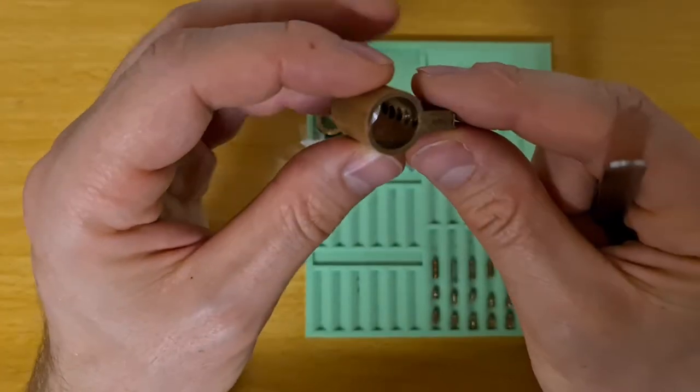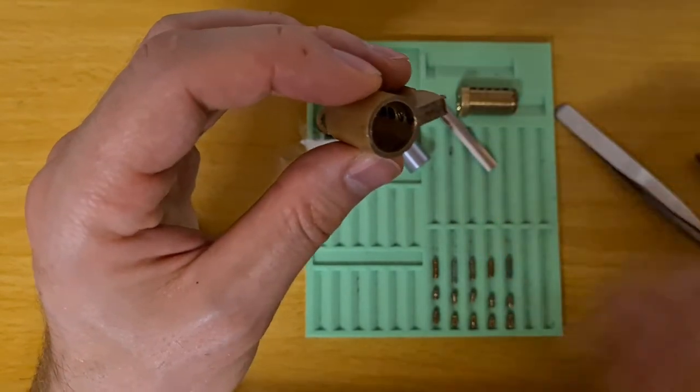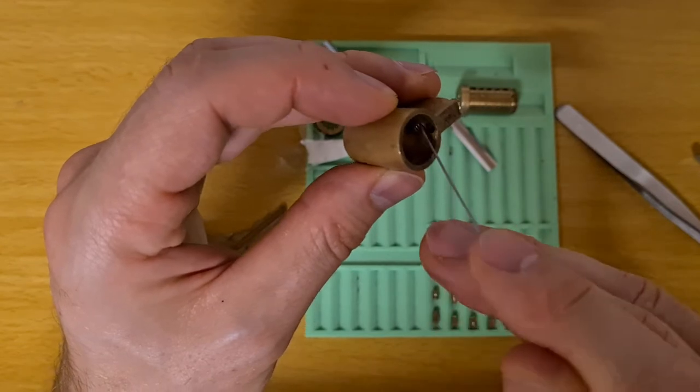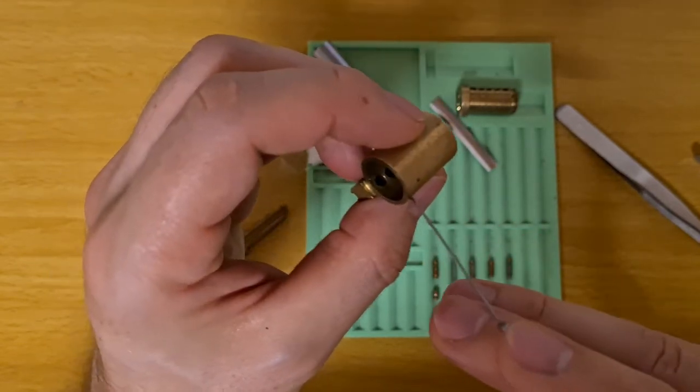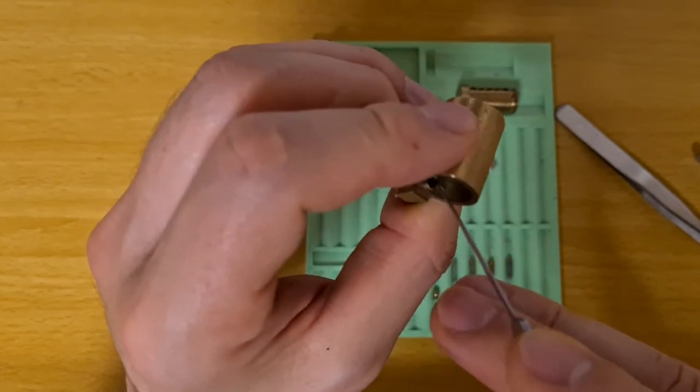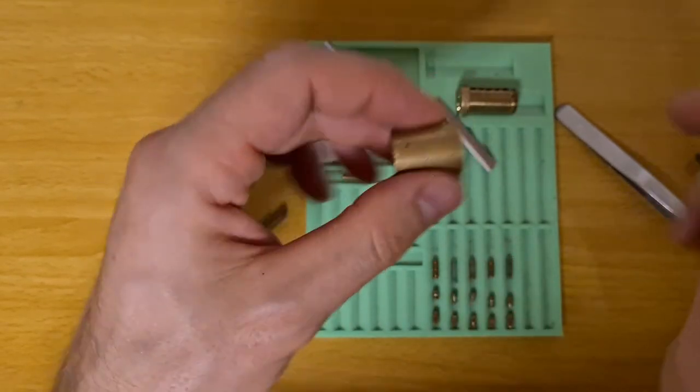Let's see what do we have there. Chamber number two is threaded, and chamber number four is threaded as well. One, three, and five are stock.